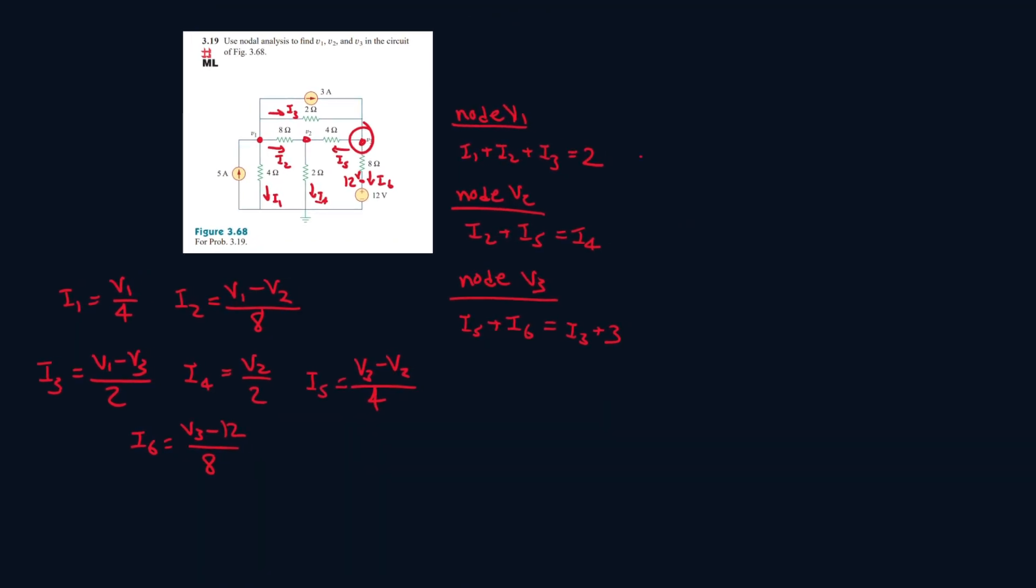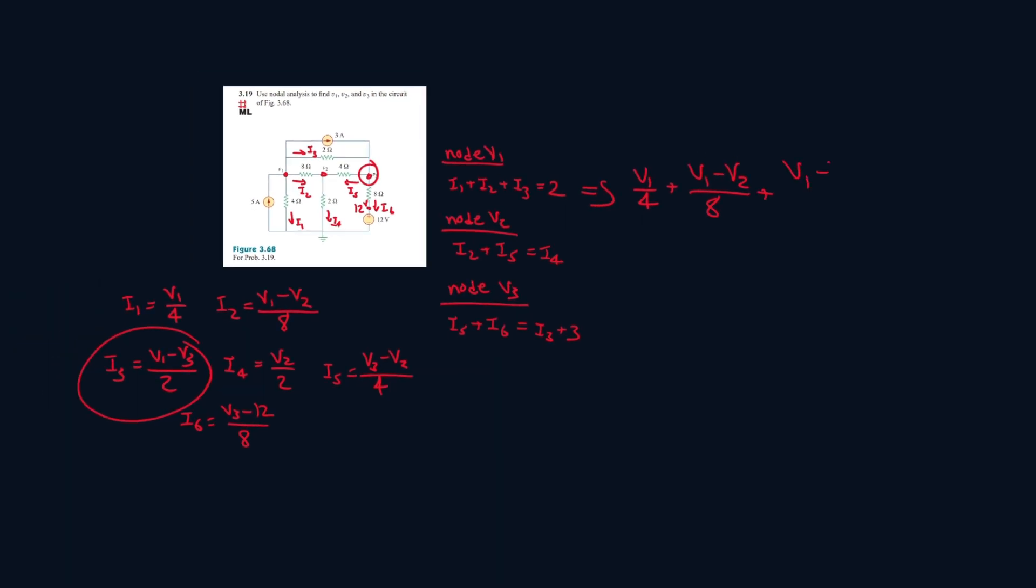Now, let's start plugging things in. I1 will be V1 over 4, plus I2 which is V1 minus V2 all over 8, plus I3 which is V1 minus V3 all over 2 equals 2. For the second equation, I2 plus I5, this one will be V3 minus V2 all over 4, and let's bring the I4 to the other side, so it will be minus V2 over 2 equals 0.